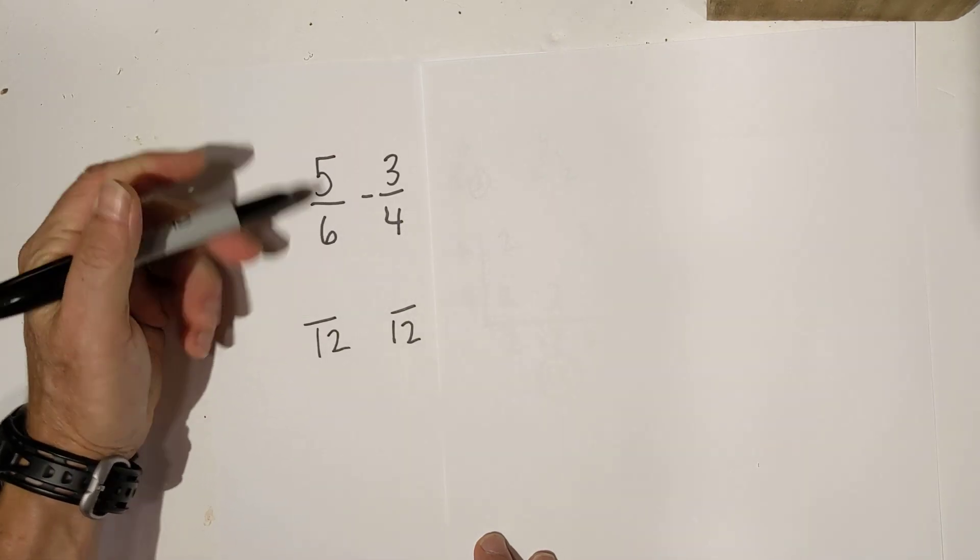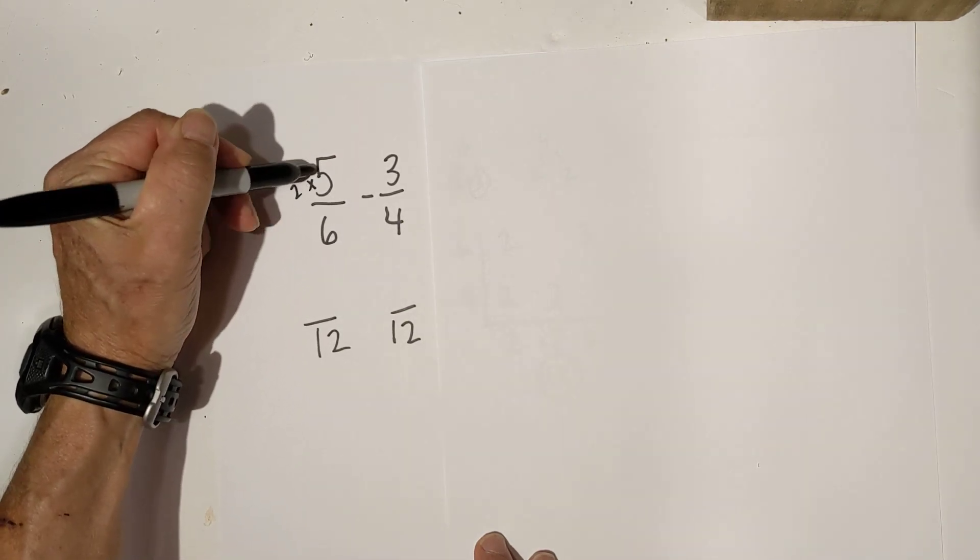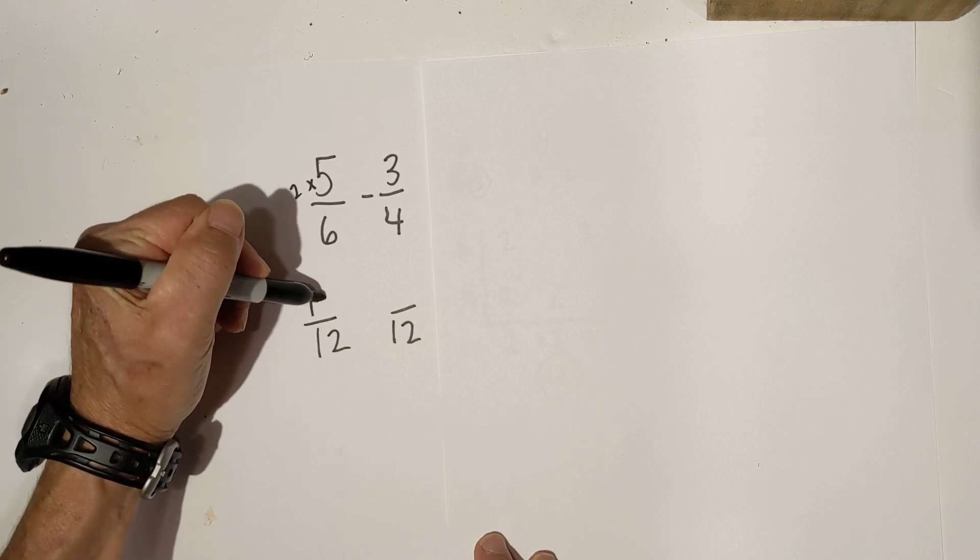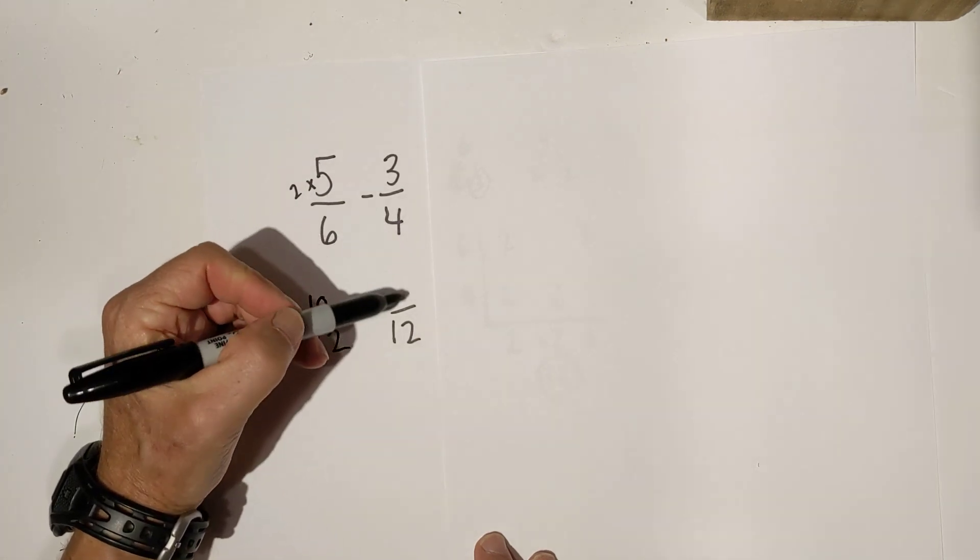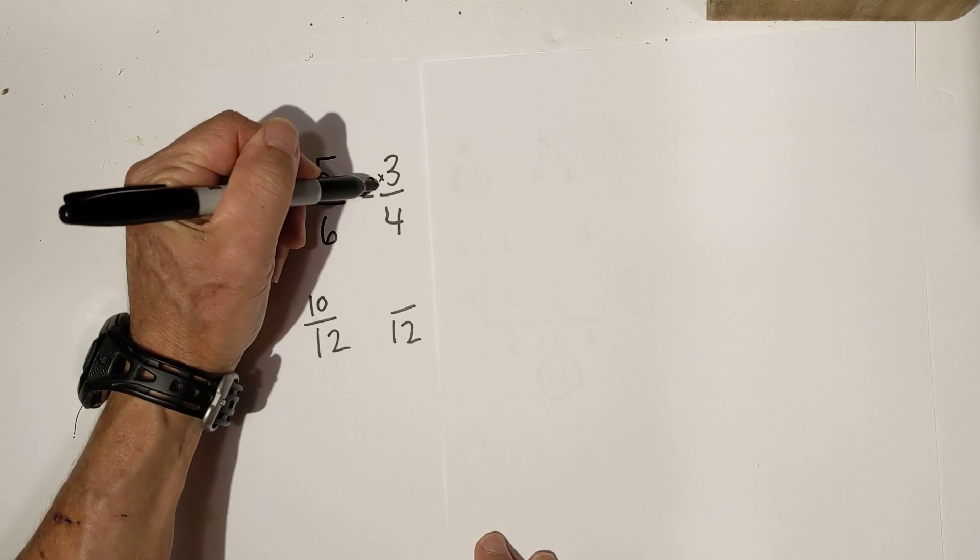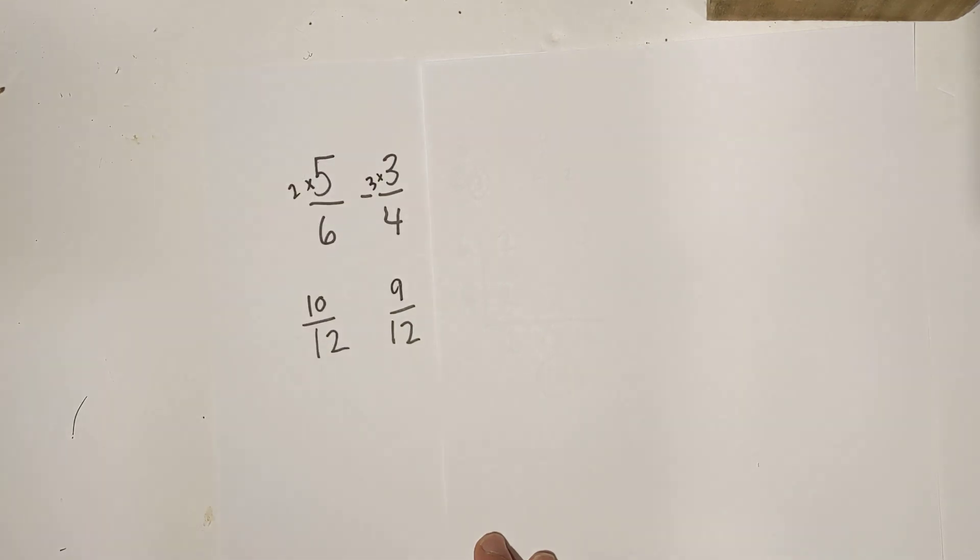Well, 6 goes into 12 two times. So I'm going to multiply 5 times 2, and that's 10. And 4 goes into 12 three times. And that's 3 times 3, which is 9.